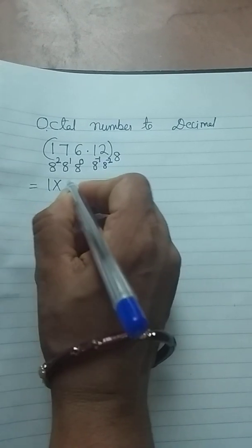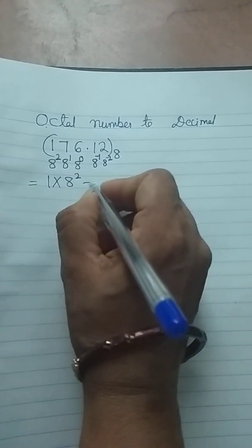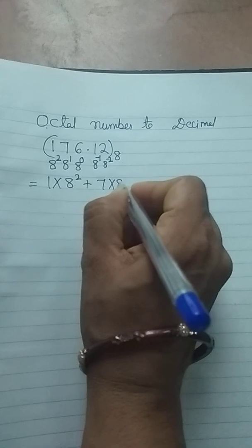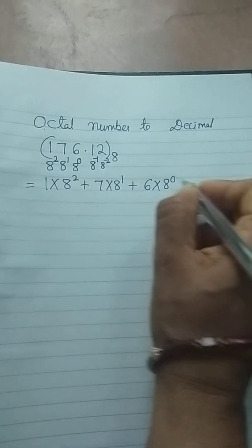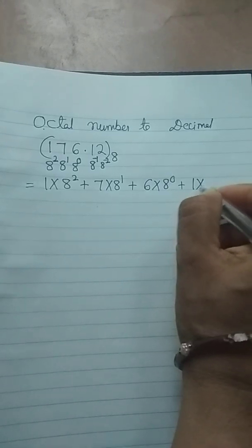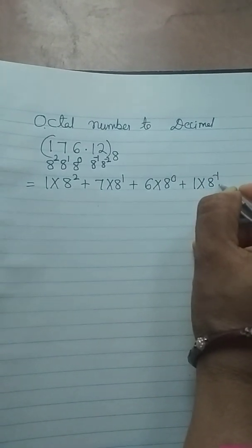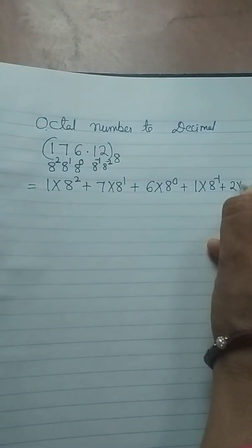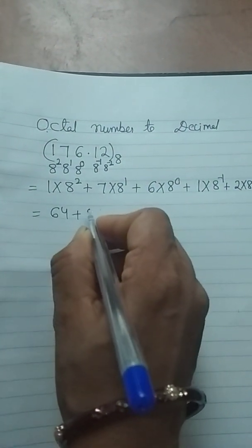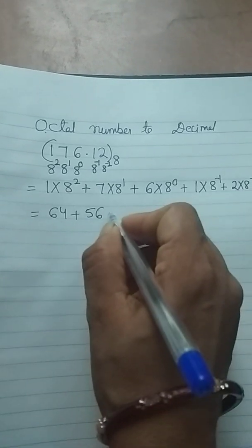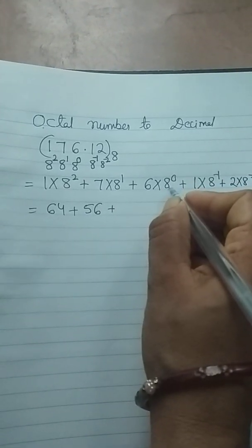1 into 8 to the power of 2, plus 7 into 8 to the power of 1, plus 6 into 8 to the power of 0, plus 1 into 8 to the power of minus 1, plus 2 into 8 to the power of minus 2.